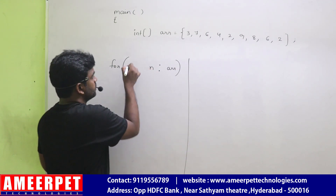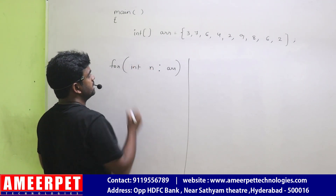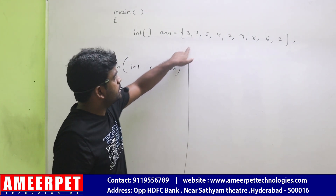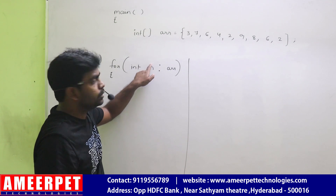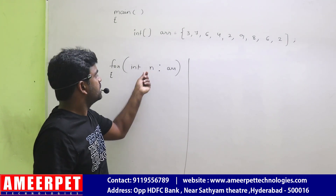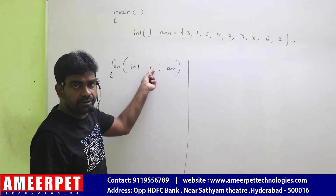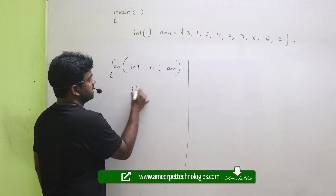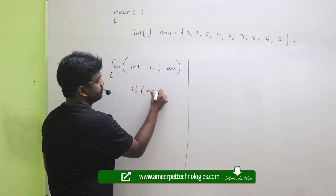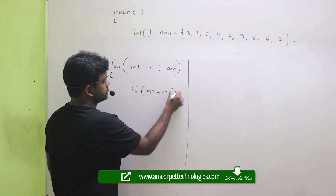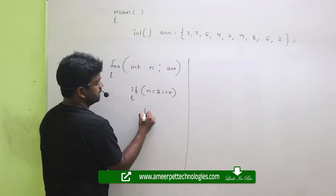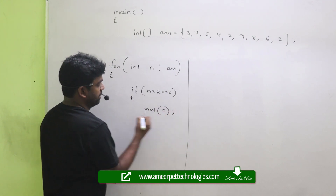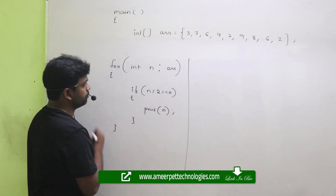It's a number of integer type. So from here each element will come and store into n. Now simple checking: is n even or not? If n mod 2 equals 0, yes, then we are printing that n value. This is the simple way of printing.